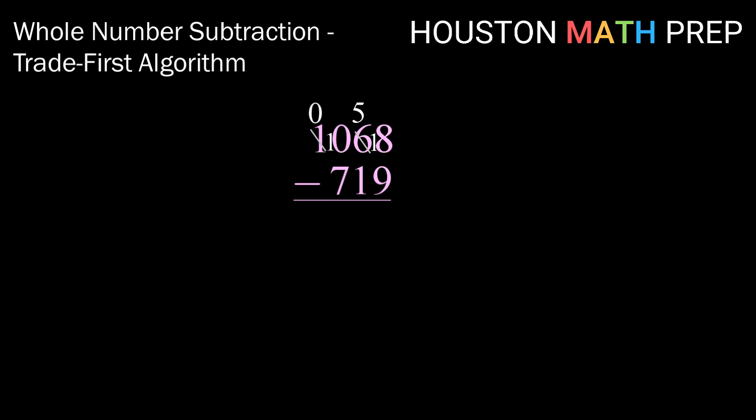Okay, now that we've got all of our trades done first, now we're ready to subtract. So 18 minus 9 gives us 9, 5 minus 1 gives us 4, 10 minus 7 gives us 3. And then we don't need to bring down that leading 0. So doing our trades first algorithm, we end up with 349.